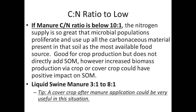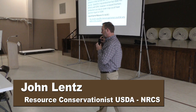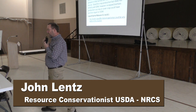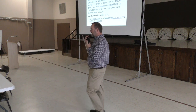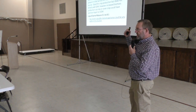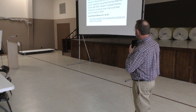If the C to N ratio is low — and by low I mean a 10 to 1 ratio — it means the nitrogen supply is so great that the microbial populations proliferate and they use up all the carbonaceous material present in the soil as the most available food source. For example, swine manure has a very low ratio, so the microbes gobble it up really quickly, and there's not much left over to actually add organic matter to the soil.